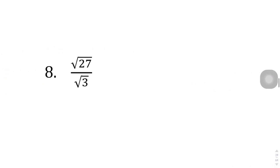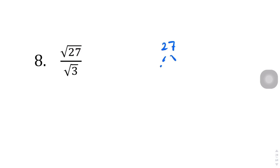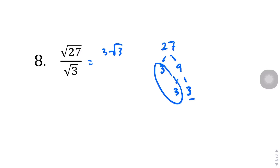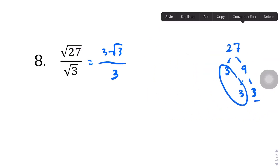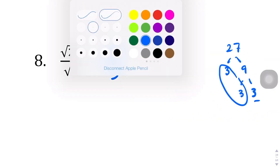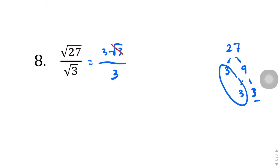Lastly, 27 over 3. 27 breaks down to 3 and 9, and 9 is 3 and 3. That pair of 3s comes out, and one 3 stays inside. So we get 3 square root of 3 over 3. The radical 3 in the numerator cancels with the denominator's radical 3, and what we're left with is plus or minus 3.